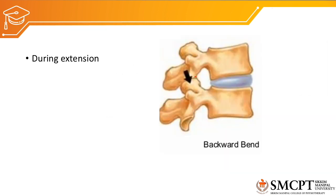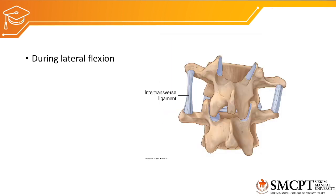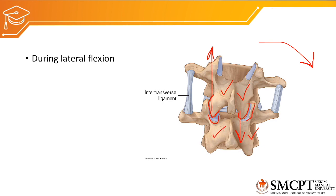During extension, the inferior articulating facet of the superior vertebra will slide inferiorly on the superior articulating facet of the inferior vertebra. During lateral flexion to the right, on the same side the inferior articulating facet of the superior vertebra slides inferiorly, and on the opposite side it slides superiorly on the superior articulating facet of the inferior vertebra. The intertransverse ligament limits this side flexion, as discussed previously for the thoracic and cervical spine.